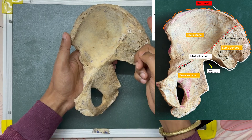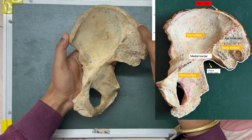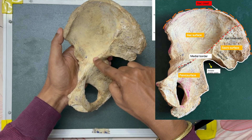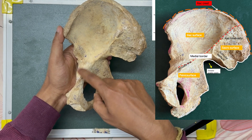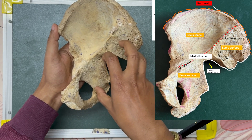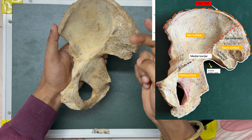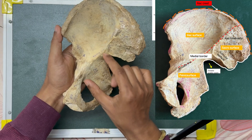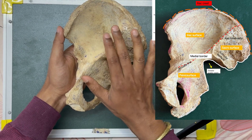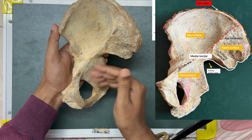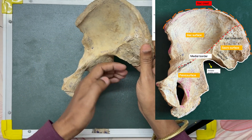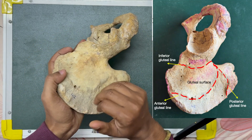The medial border arises at the junction between the ventral two-thirds and dorsal one-third of the iliac crest, running downwards to the iliopubic eminence. This medial border divides the ilium into two surfaces: the sacropelvic surface below and the iliac surface above. There are actually three surfaces in the ilium: the iliac fossa, the sacropelvic surface, and from the outer aspect, the gluteal surface.